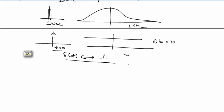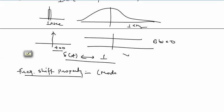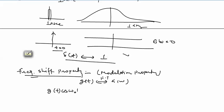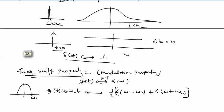In modulation, a very basic component is the frequency shifting property of Fourier transform — also known as the modulation property. If g(t) has Fourier transform G(omega), then g(t)*cos(omega_0*t) has Fourier transform equal to half*G(omega − omega_0) + half*G(omega + omega_0). This means if the original signal is band-limited up to omega_m and multiplied by cos(omega_0*t), it is shifted by plus and minus omega_0.